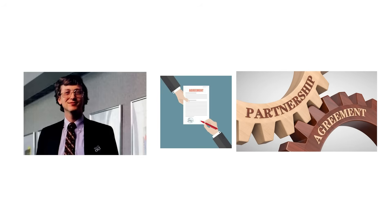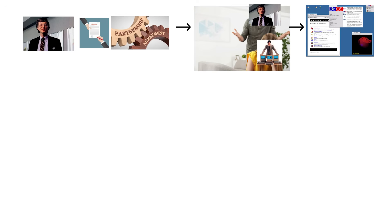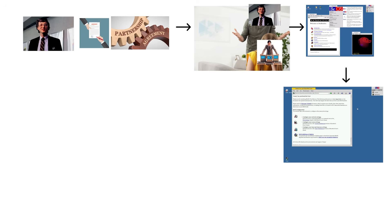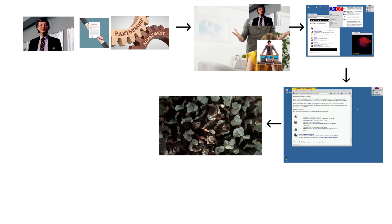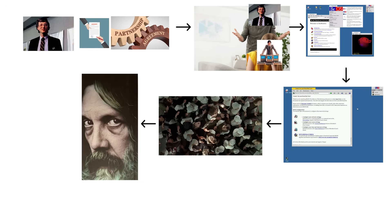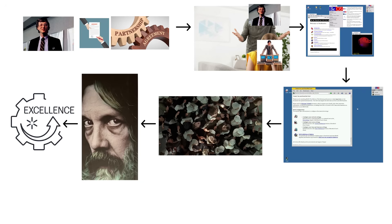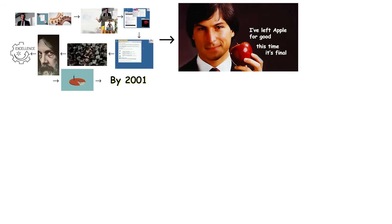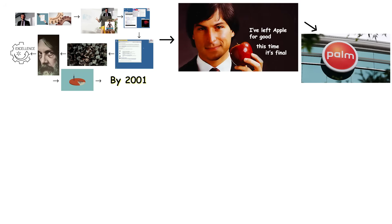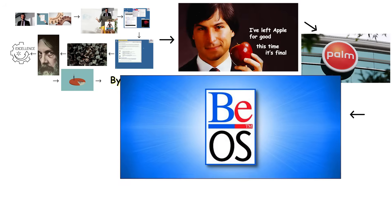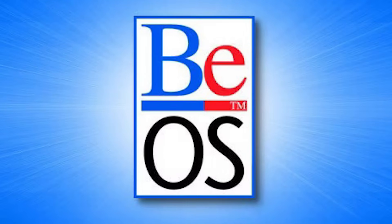Even worse, Microsoft's licensing agreements with PC manufacturers strongly discouraged them from shipping multiple operating systems. A system could technically support BeOS, but you often had to install it yourself, which eliminated the mainstream audience entirely. The result was a small but passionate user base, excellent engineering, and almost no real market penetration. By 2001, Be Incorporated was out of money and out of options. The technology was sold to Palm, the original company dissolved, and BeOS quietly joined the long list of brilliant operating systems that were simply born in the wrong decade.